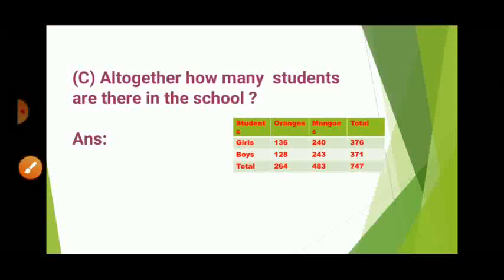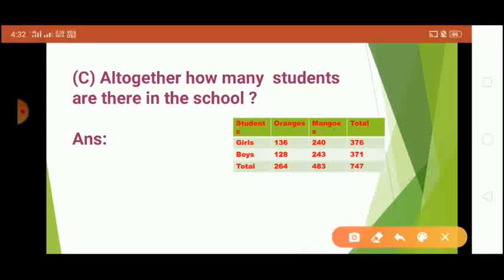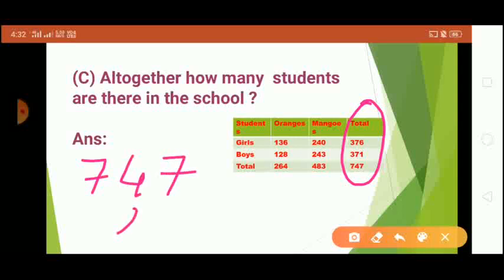The next question is: altogether, how many students are there in the school? We have to find the total number of boys and girls. The total number of girls is 376 and the total number of boys is 371, so the total number of students is 747. Don't forget to write 'students' in your answer.